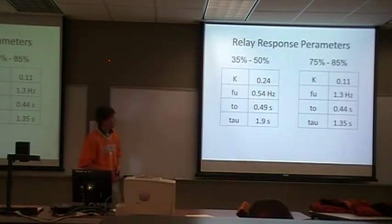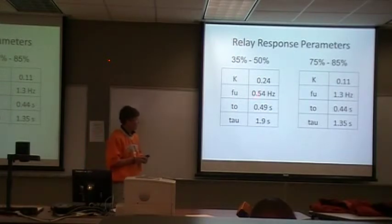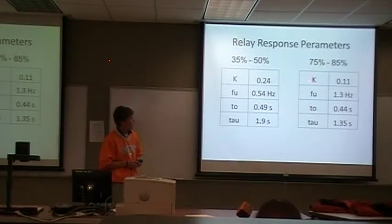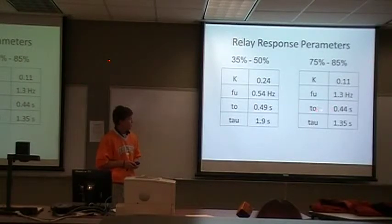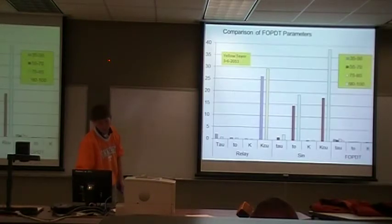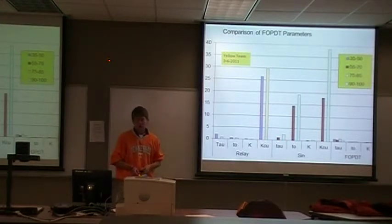These are the results from my and Brad's relay response experiments. Brad's K was 0.24, his FU was 0.54 hertz, his T-naught was 0.49 seconds, and his tau was 1.9 seconds. For my experiment, the K was 0.11, the FU was 1.3, the T-naught was 0.44, and the tau was 1.35. We took these values and compared them to the sinusoidal values as well as the FOPDT values.